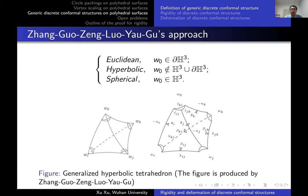There are two approaches to define a generic discrete conformal structure. One approach is proposed by Zhang, Guo, Zheng, Luo, Yao, and Gu. They embed each triangle in a generalized hyperbolic tetrahedron.